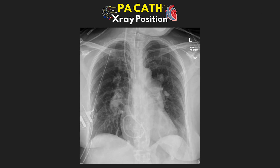Now example nine — take a look at this one and see if you can see what's happening. This one is actually a pretty interesting one. If we track along, we see that it's inserted right IJ, works its way down, and it appears to be coiled in the patient's right atrium. In cases like this, it would need to be pulled back and refloated.